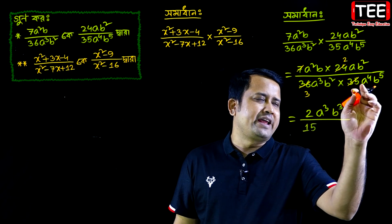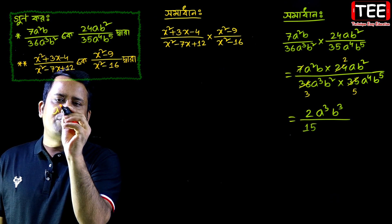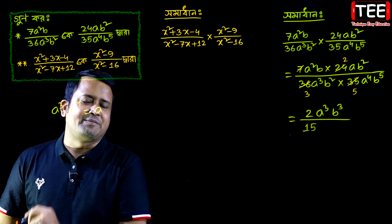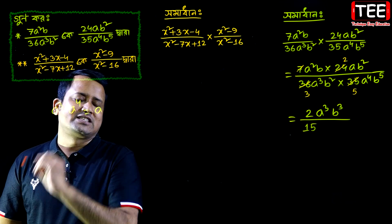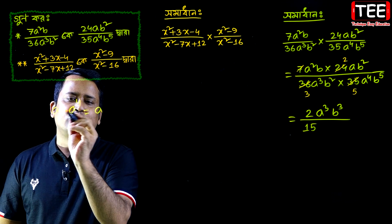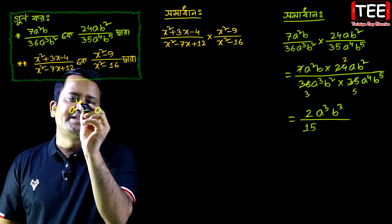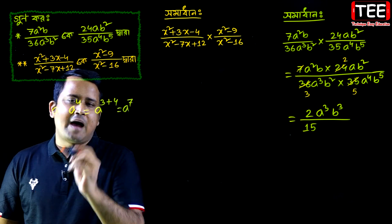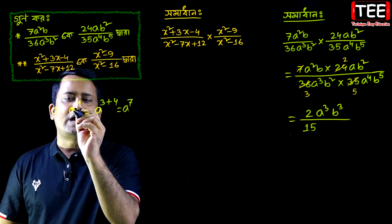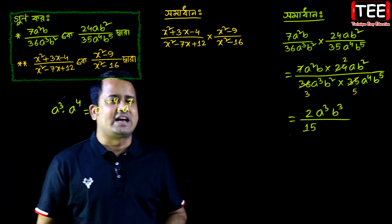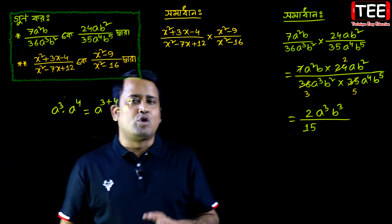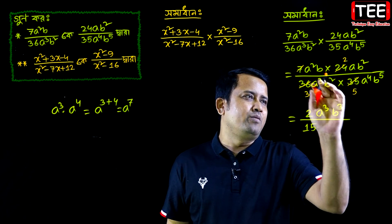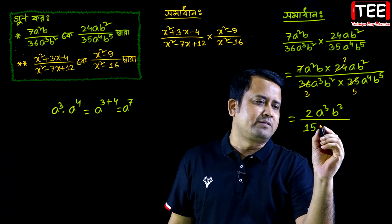A cube. A squared, b and b. You can write a to the power of 7. That means a cube times a to the power of 4 is a to the power of 7.